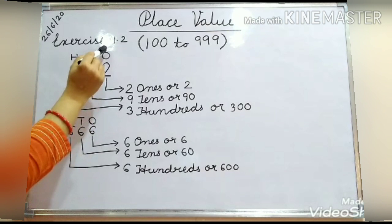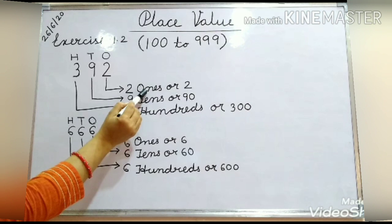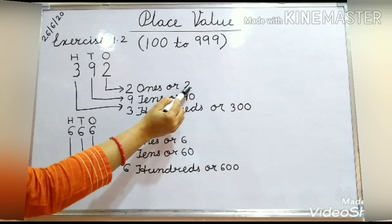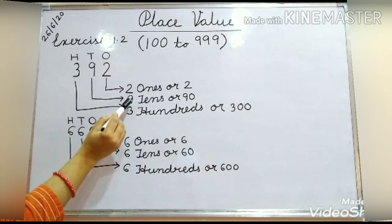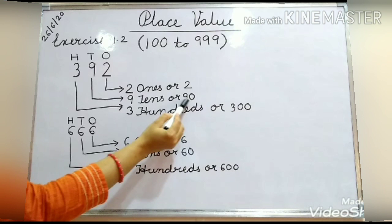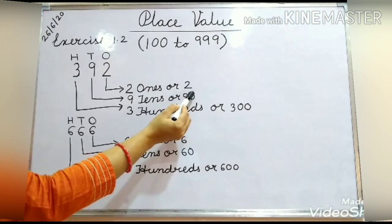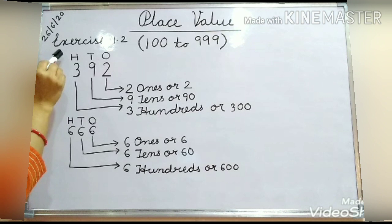Start from the 1's place digit. 2 is at 1's place, so that means it is 2 ones. In number, you will write 2. Here 9 is at which place? 10's place. Then what is the value of 9? 9 tens. When you write it in number, 9 and for 10's place you put a 0 — that is 90.